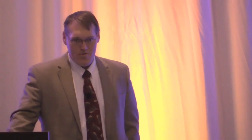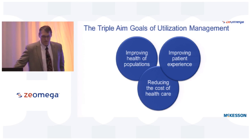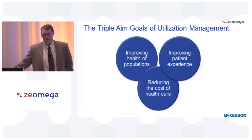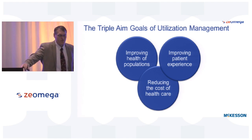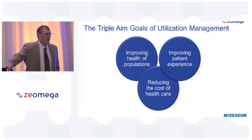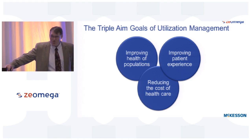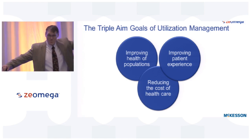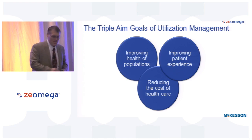When we talk about utilization management, everybody recognizes what we call the triple aim goals: improving the health of the population — how do we make sure patients are getting better quicker, and that the population we serve isn't falling into that 3% from chronic conditions? How do we improve the patient experience and make sure providers are getting the right experience for the population they're serving? Because members are also patients and patients are also members. We can't just treat them the same anymore.